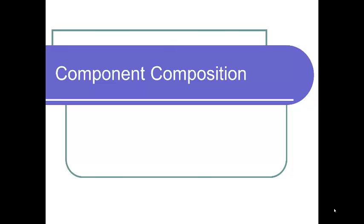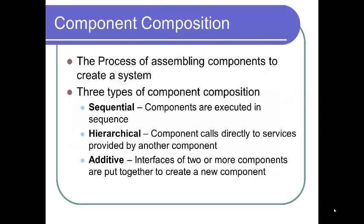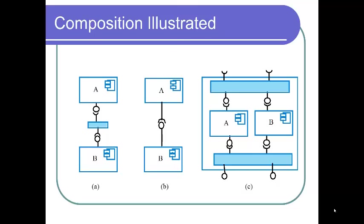Component composition is the process of assembling components to create a system. There are three types: sequential, where components are executed in sequence; hierarchical, where a component calls directly to services provided by another component; and additive, where the interfaces of two or more components are put together to create a new component. These are illustrated as A (sequential), B (hierarchical), and C (additive) in figure 17.10 on page 469 of the 9th edition.